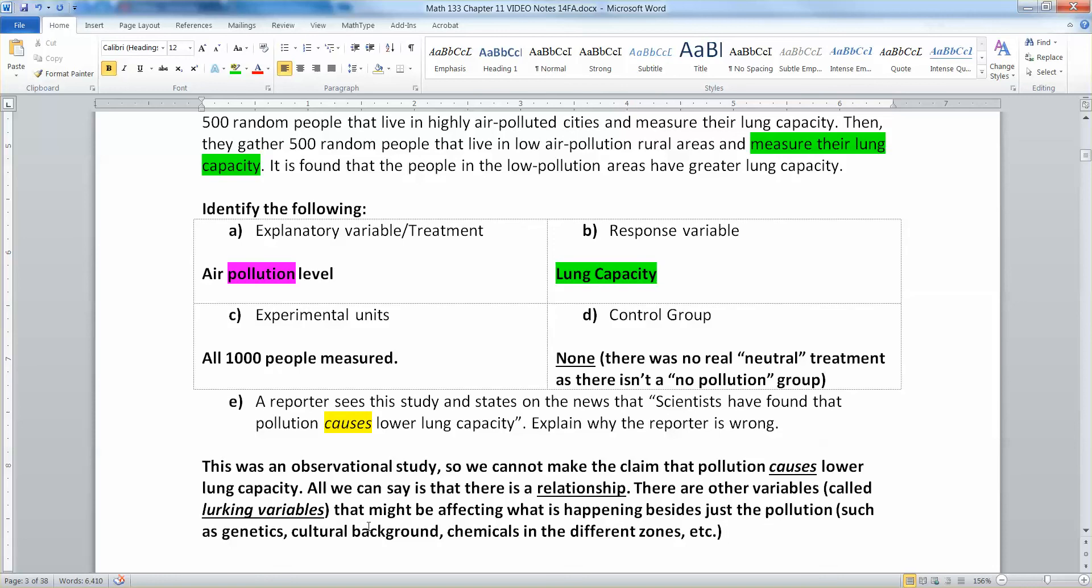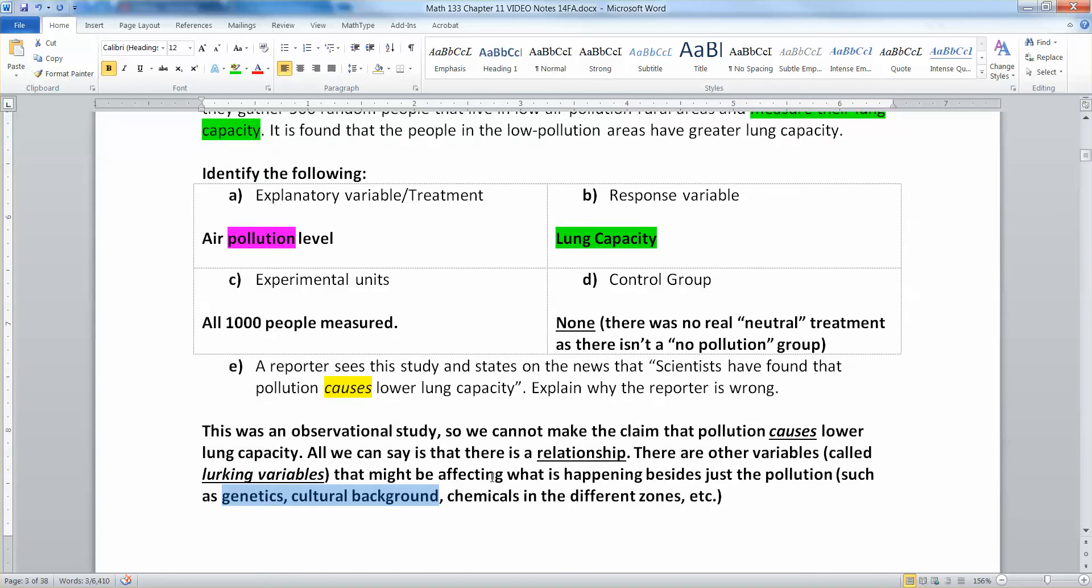So let me give you an example of the cultural background genetics argument. There are countries in this world where, for example, the people that live in the rural areas are of a different ethnic background than the people that live in the cities. So for whatever reason, just culturally, they have stayed in their little enclaves, they have a different background, therefore they are different, and they will have different lung capacities. So what you're capturing is the fact that you're grabbing two different groups of people, not the fact that the pollution is causing lung capacity.